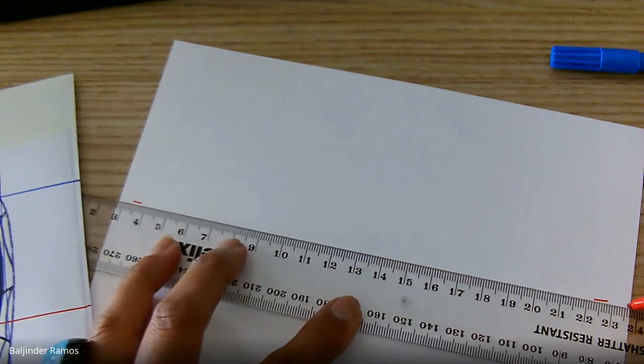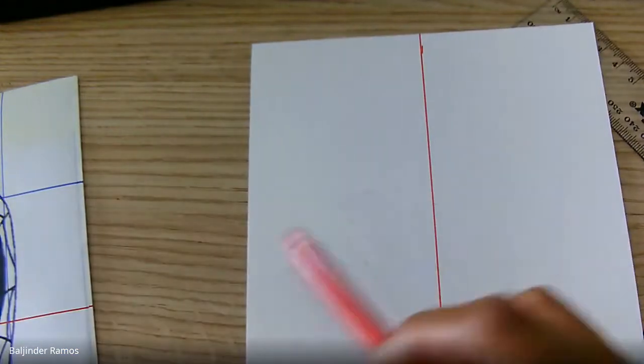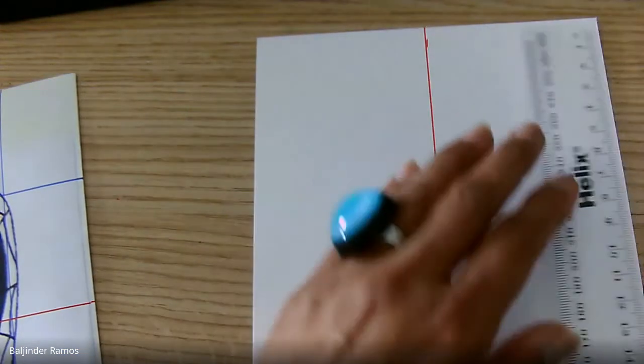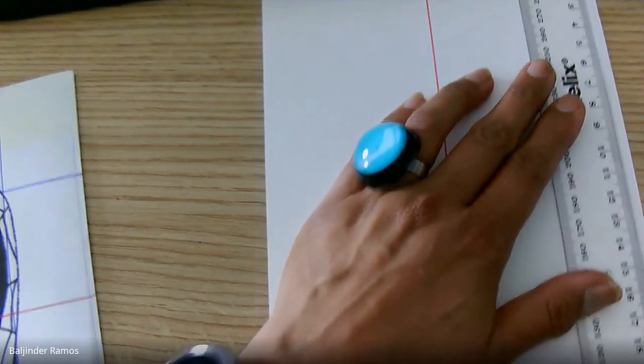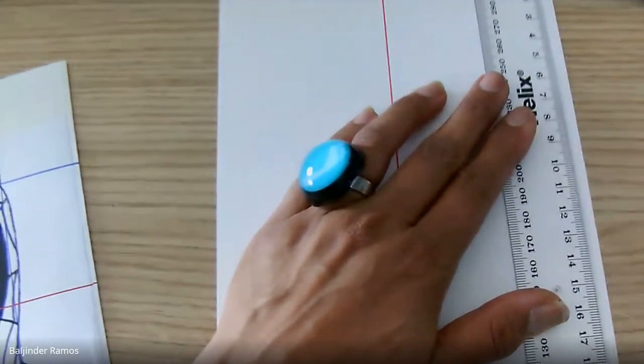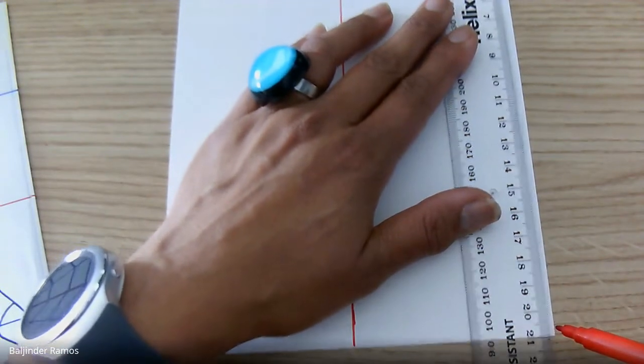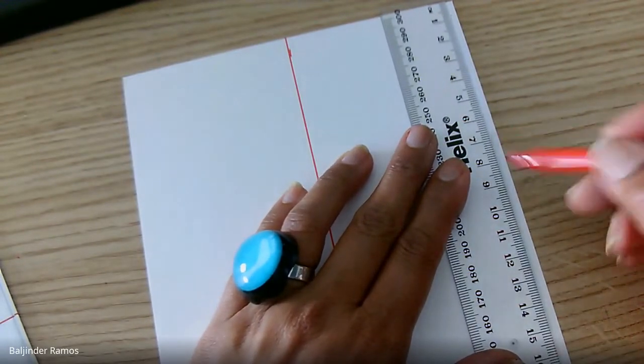Now we need a line going across, so we're going to measure this way this time. Zero on the line - that's about 21 centimeters. I'll just move the camera that way. So it's 21 centimeters approximately, so half of 21 is 10.5.